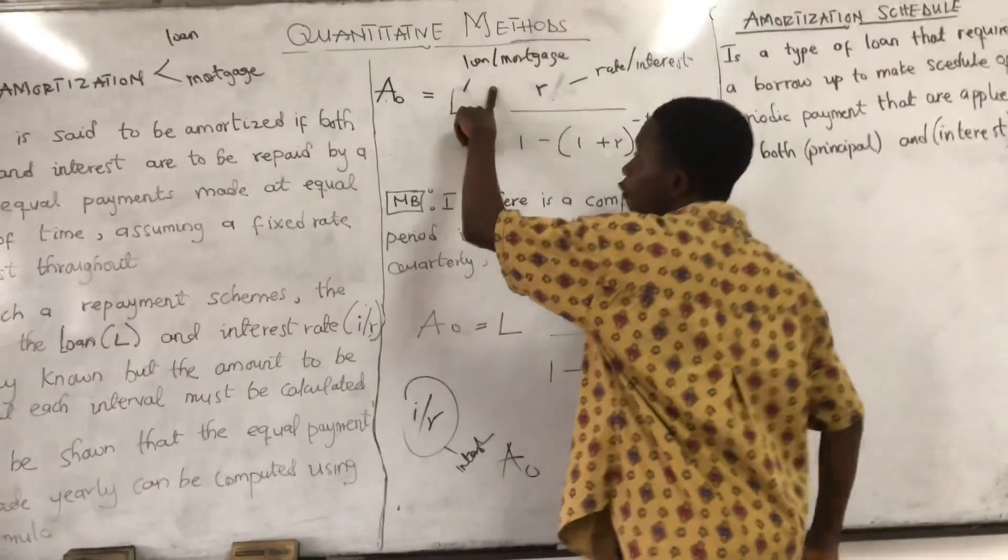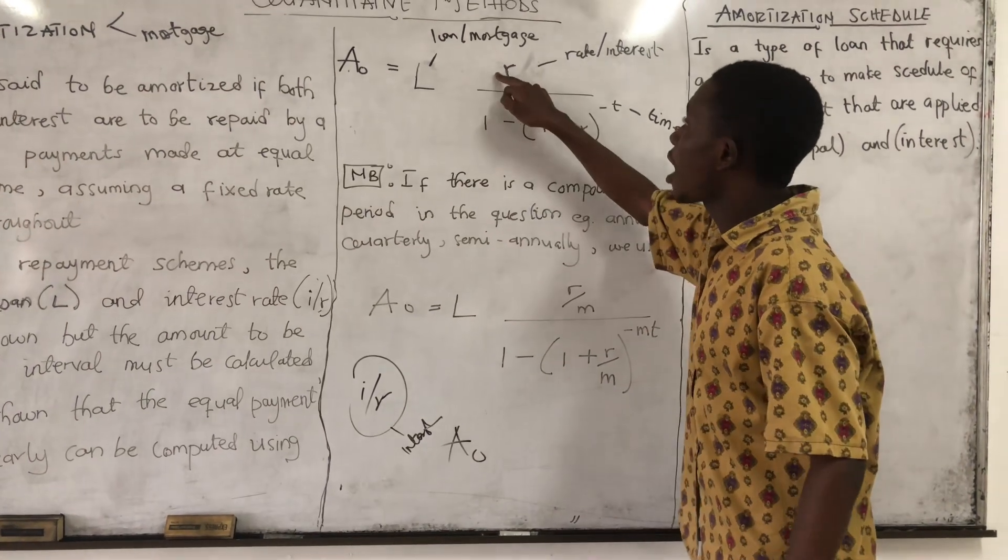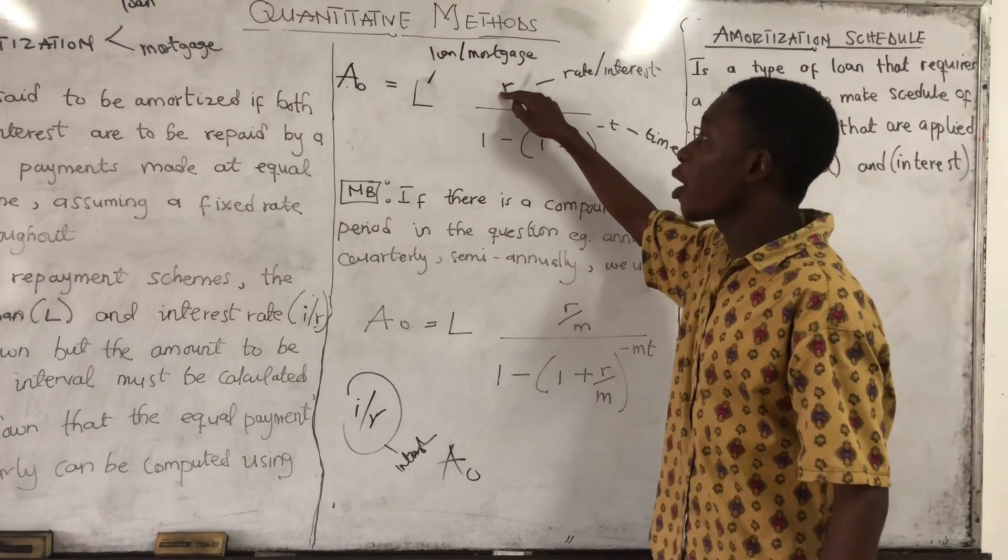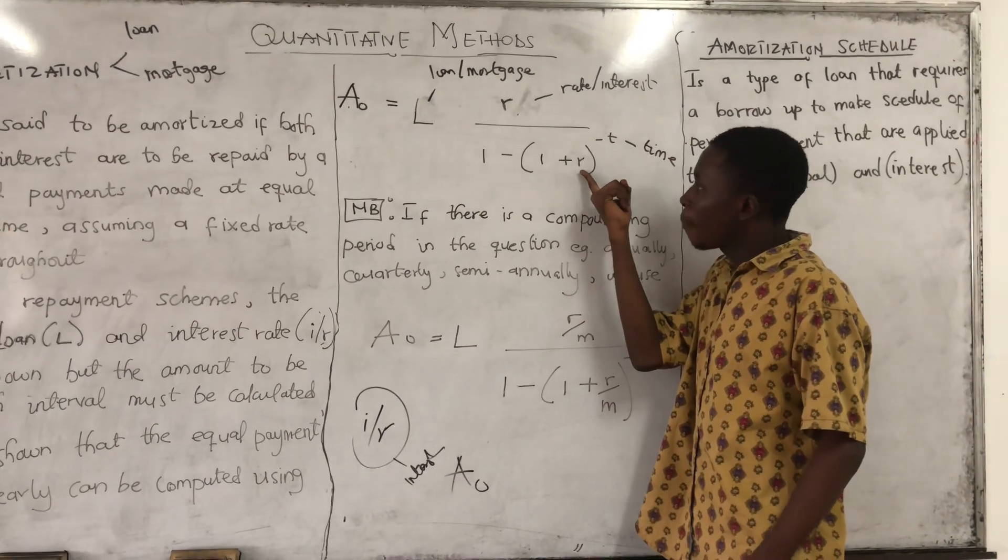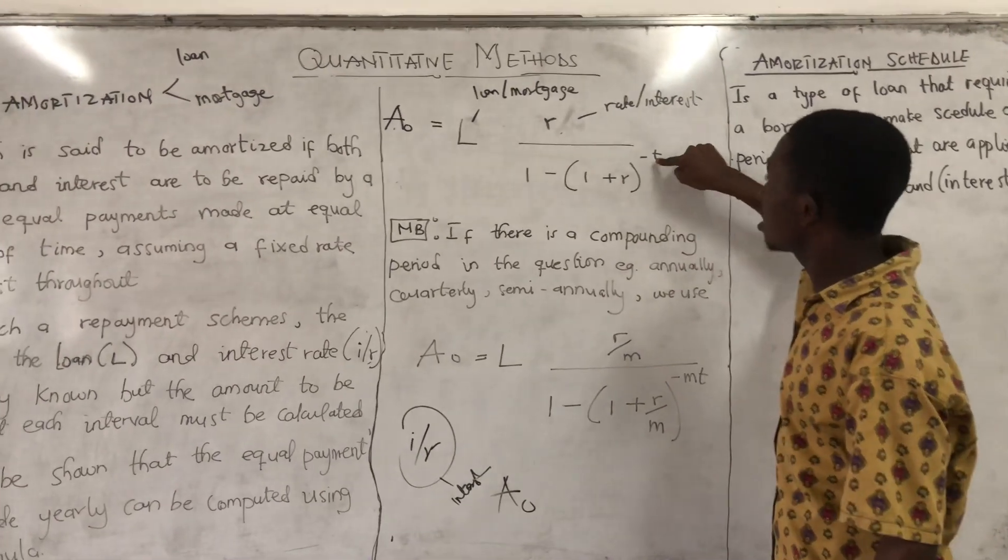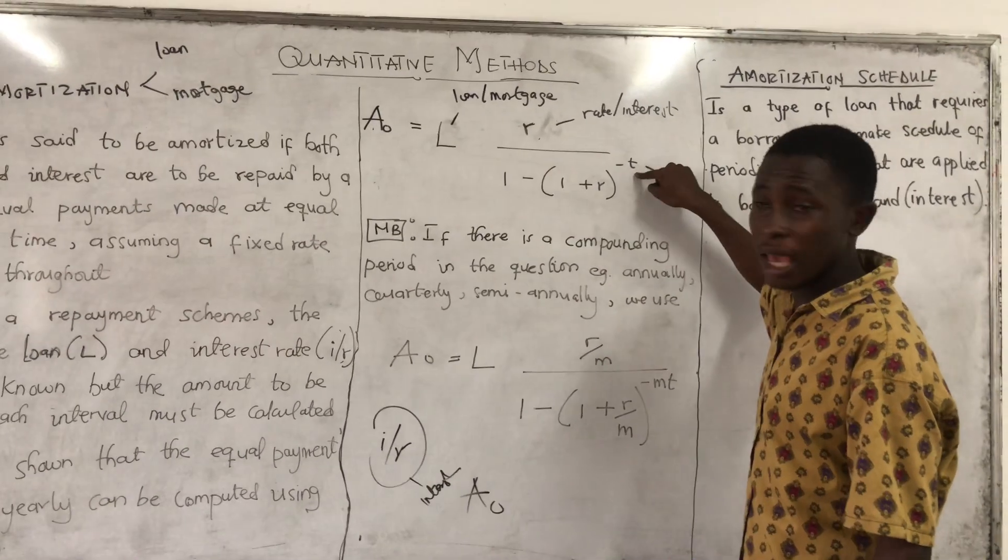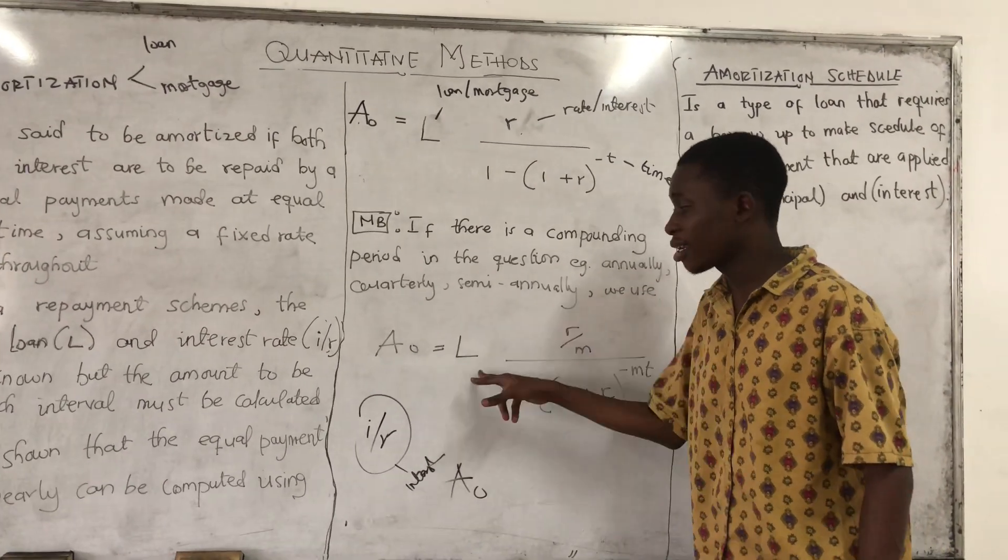But since there is a compounding period in the question, where the R is, we divide it by the compounding period, which is denoted by letter N, and also divide the R by letter N, which is the compounding period, and also multiply the T by letter N. So we use this formula when there is a compounding period in the question.